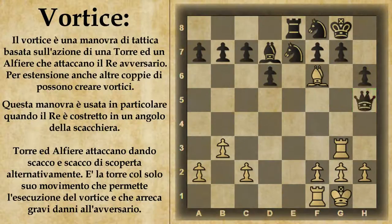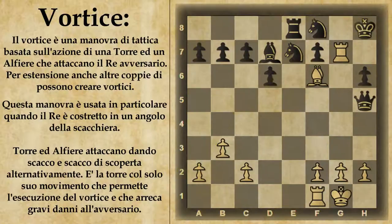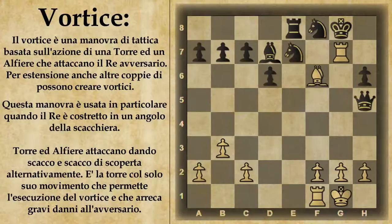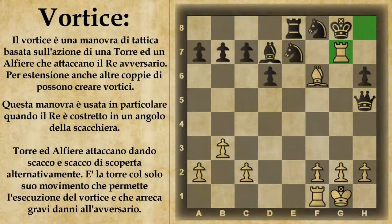Quindi qui il nero supponiamo che catturi la donna gentilmente offerta. Il bianco mette appunto il vortice e al solito c'è la solita sequenza di mosse. Da stare molto attenti che nessun pezzo si possa frapporre sulla linea dell'alfiere: in questo caso non c'è verso perché la linea dell'alfiere è cortissima, quindi nessun pezzo può frapporsi sulla linea dell'alfiere, nessun pezzo può attaccare l'alfiere per rimuovere la minaccia quando si dà scacco di scoperta, e nessun pezzo deve ovviamente attaccare la casa dove dà scacco la torre.